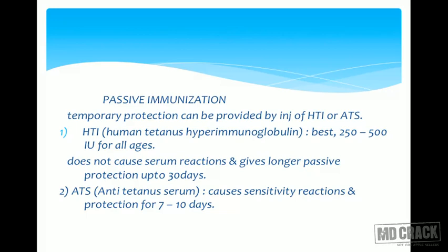For passive immunization, temporary immunity can be provided. There are two options: human tetanus hyperimmunoglobulin and anti-tetanus serum. Human tetanus immunoglobulin is derived from human sources and is expensive, but is better at conferring protection with fewer side effects. Anti-tetanus serum is derived from hyperimmune horses and is cheap, but the incidence of side effects can be more.